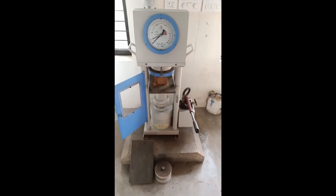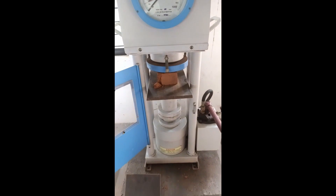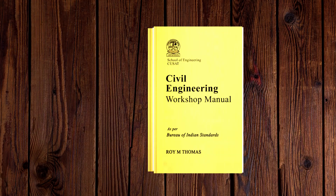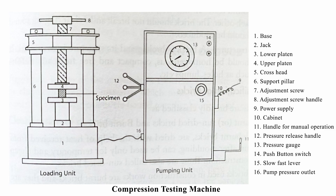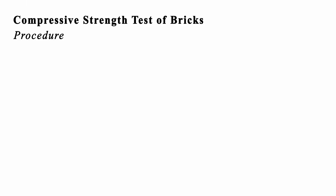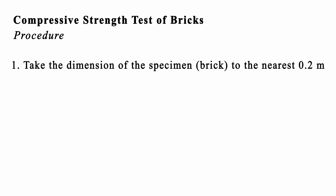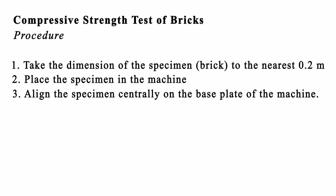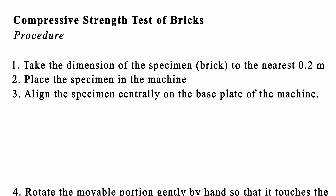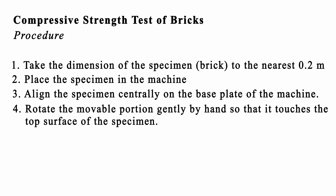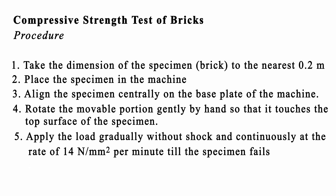This machine can be used to find the compressive strength of any material — concrete, cement, etc. Compressive Strength Test of Bricks Procedure: 1. Take the dimension of the specimen brick to the nearest 0.2 mm. 2. Place the specimen in the machine. 3. Align the specimen centrally on the base plate. 4. Rotate the movable portion gently by hand so that it touches the top surface of the specimen. 5. Apply the load gradually without shock and continuously at the rate of 14 N per mm² per minute until the specimen fails. 6. Record the maximum load.